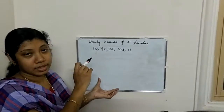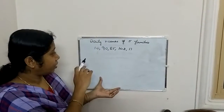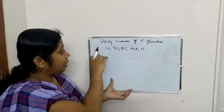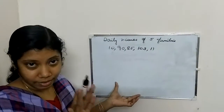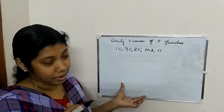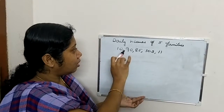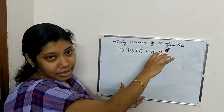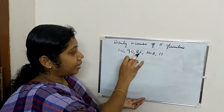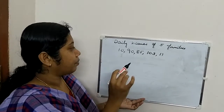Okay, first problem: find out the average income. The daily income of 5 families is given as the numbers 10, 90, 85, 103, and 11.